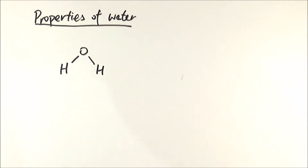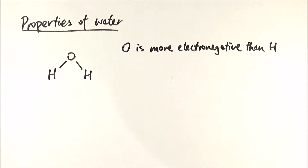For those of you who also do chemistry, this might be an overlapping concept — electronegativity. Oxygen is more electronegative than hydrogen. In chemistry terms, it is about the ability of an atom to attract electrons to orbit around it.